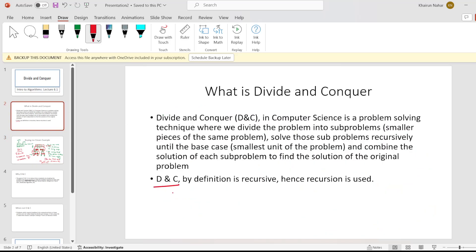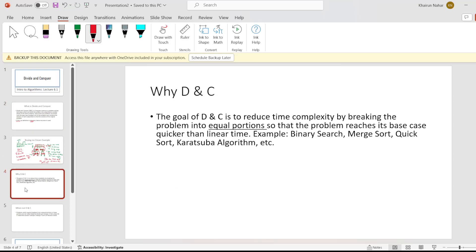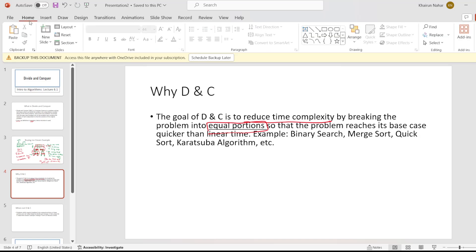Divide and conquer uses recursion. Why? Because by definition D&C is recursive, which means we're doing the same work at every step. Now the question is why divide and conquer? Well, the goal of divide and conquer is to reduce the time complexity by breaking the problem into equal portions so that the problem reaches its base case quicker than linear time.